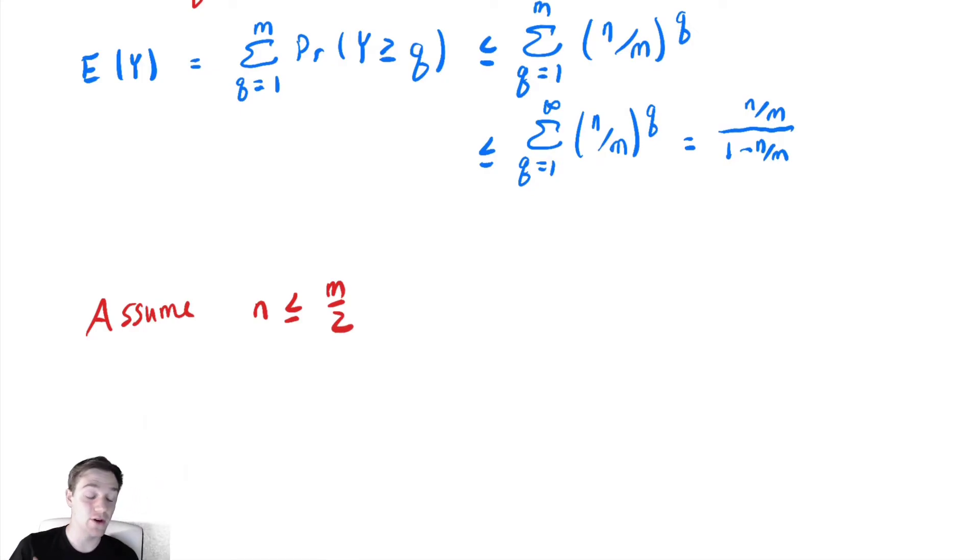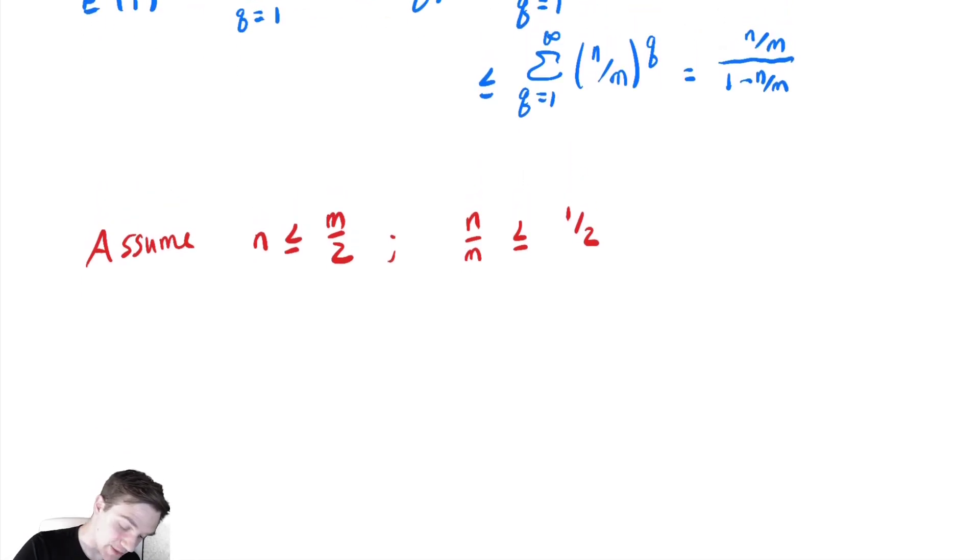Let's assume n ≤ m/2, that we never have occupied more than half the table. With that assumption, n/m ≤ 1/2, and therefore our expected value of Y is less than or equal to (1/2)/(1-1/2), which equals 2.